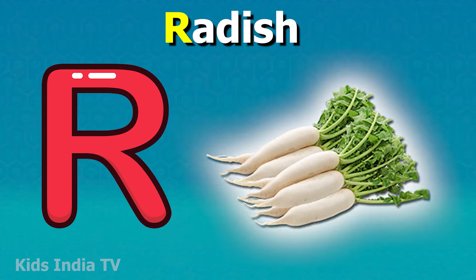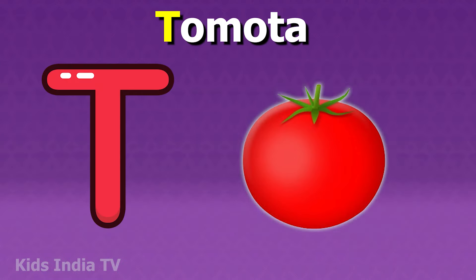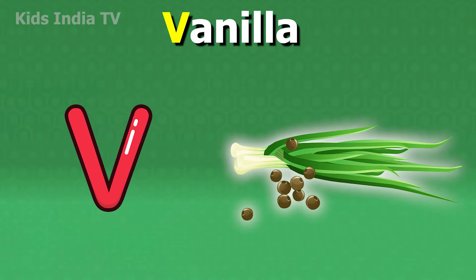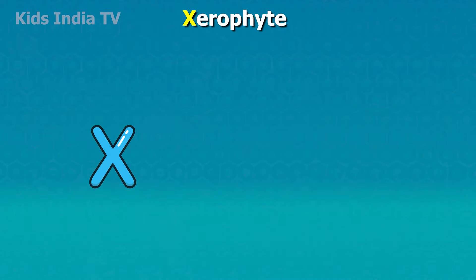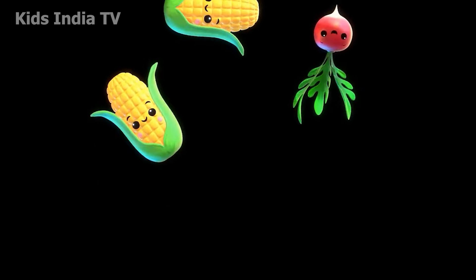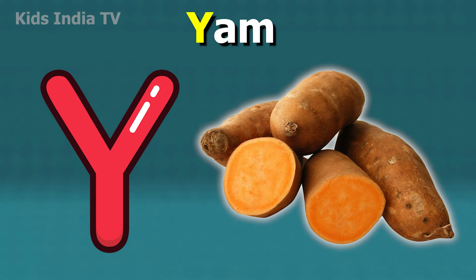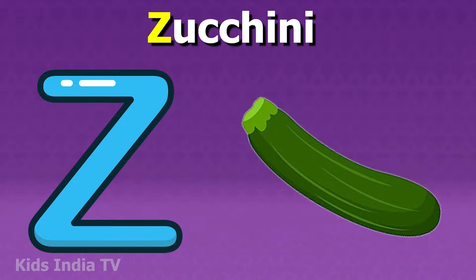R for radish, S for spinach, T for tomato, U for ube, V for vanilla, W for wax gourd, X for ximenia, Y for yam, Z for zucchini. Thank you.